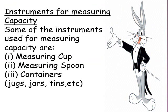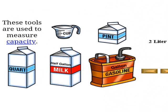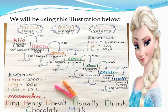The instruments we use in measuring capacity are: measuring cup, measuring spoon, containers, jugs, jars, tins, and so on and so forth. Like we have them here — you can see this measuring cup, this carton of milk, this gasoline container, and so on and so forth. Now we'll be using this illustration to explain the conversion units for capacity.